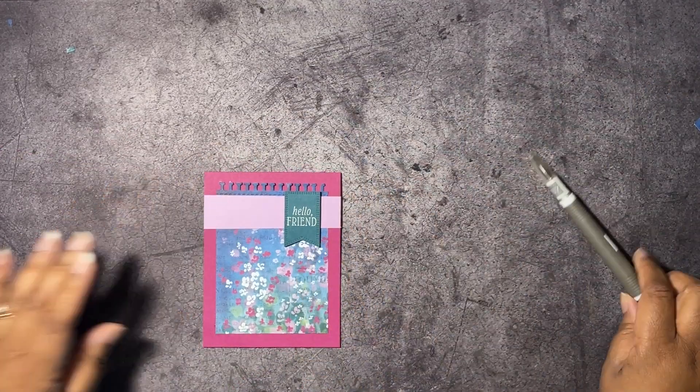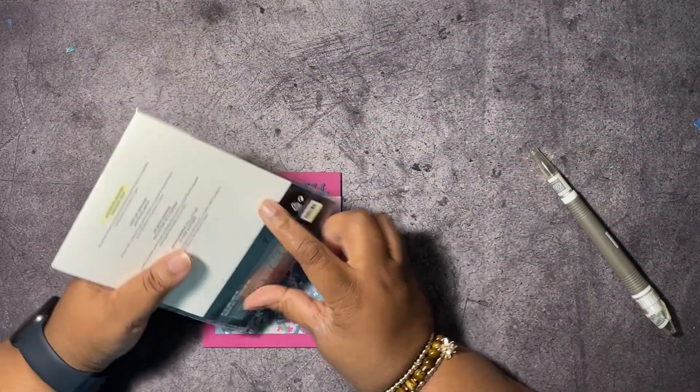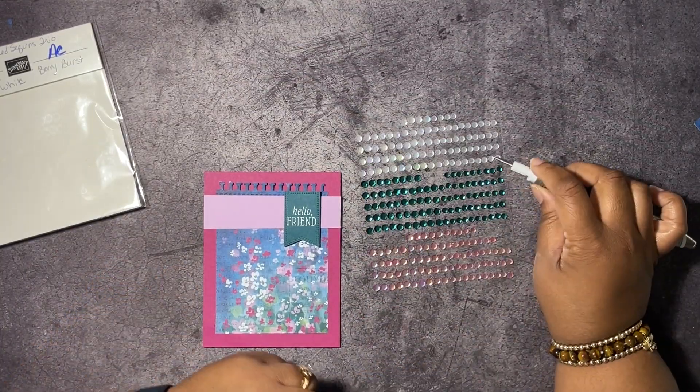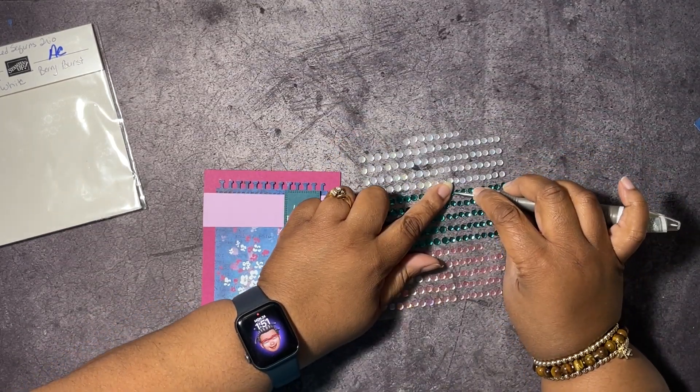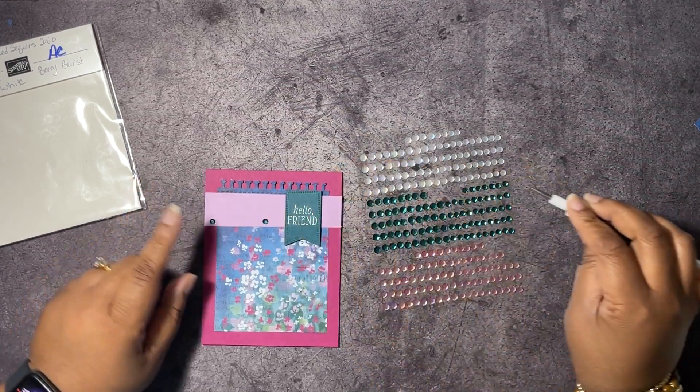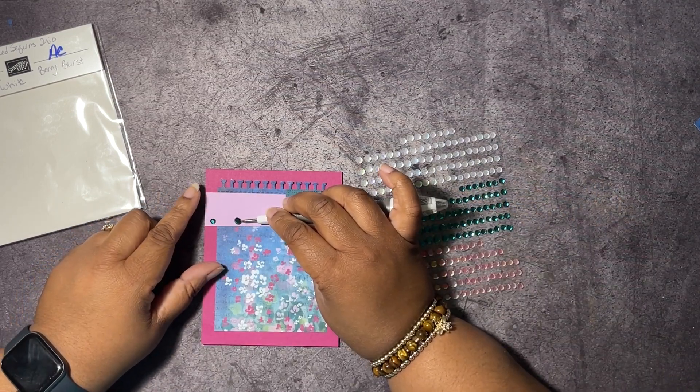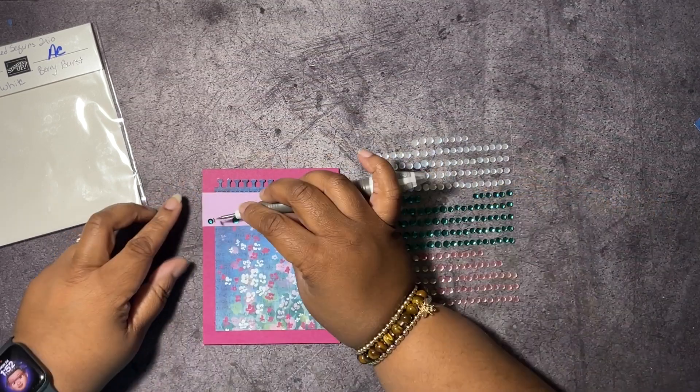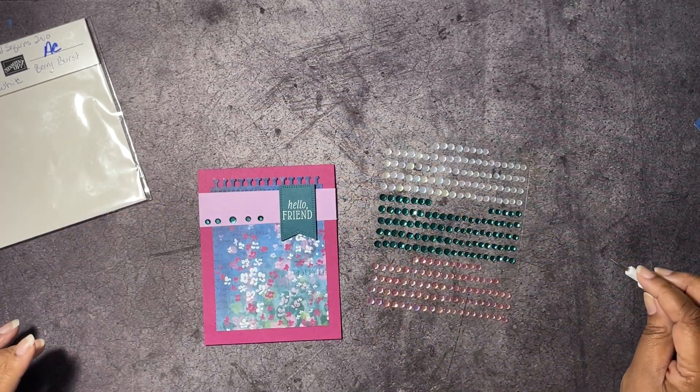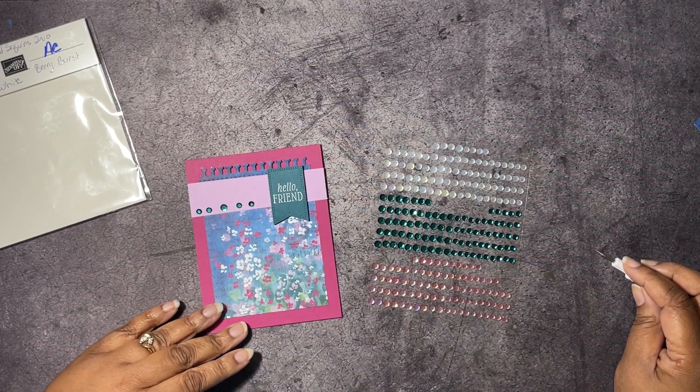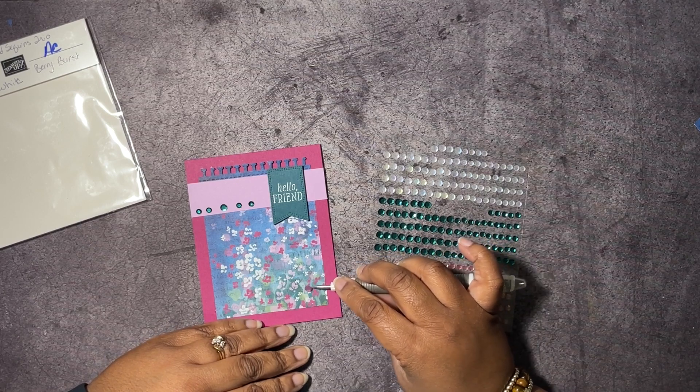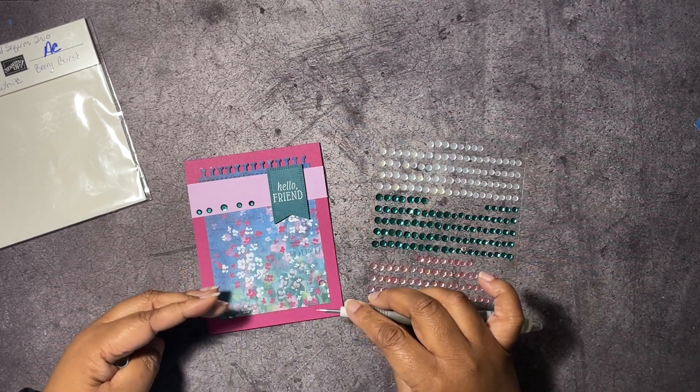Then we're going to get our Take Your Pick tool and add some bling. The bling that we're using is the adhesive backed sequin trio. It has the Pretty Peacock, white, and Berry Burst. I think I want to use some of the small Pretty Peacock. I think I'll use two small ones on each side of the bigger one like that. I think that's cute. I could have lined it up a little better. Then I want to put a big one and a small one down here. We'll do that and call this card done.